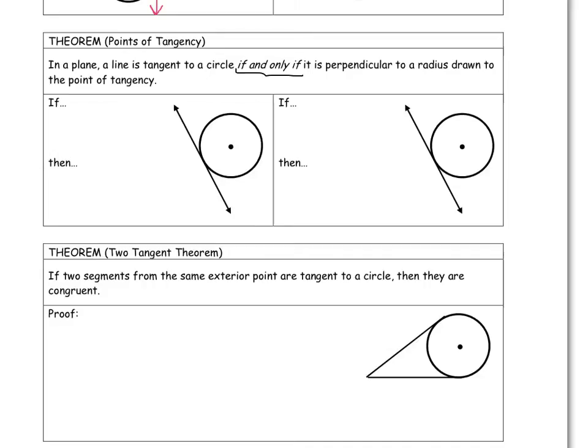So the first way is if the line is tangent to a circle, so starting with that. So if a line is tangent to the circle, then it is perpendicular to a radius drawn to the point of tangency.